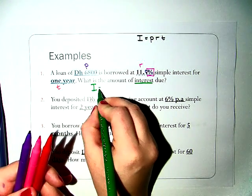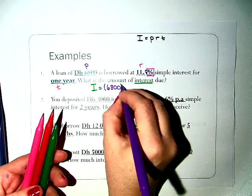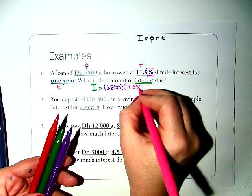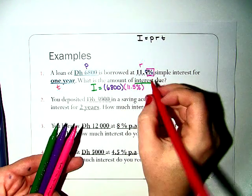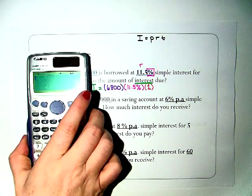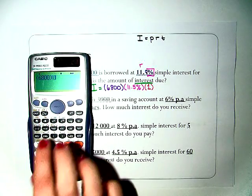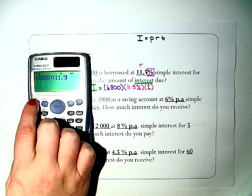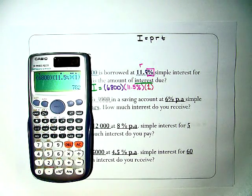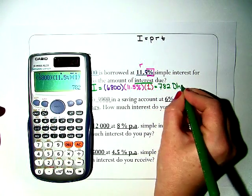So let's go ahead and put this in. I equals, instead of P, we're going to write 6,800 times our rate, which is 11.5%. And our time is one year. So in our calculator, we're going to write that just as it's seen: 6,800 times 11.5. We have to hit shift and percent symbol, just like our last unit, times one. And we get that our interest amount is 782 dirhams.